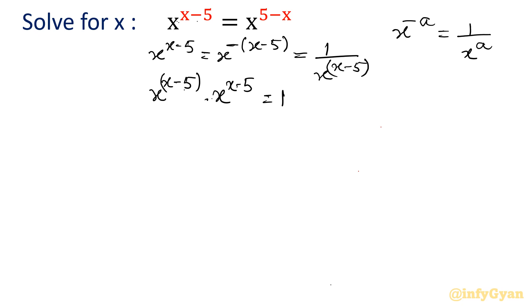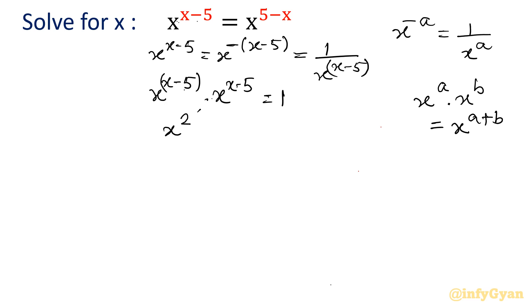Summing the exponents using the property x^a times x^b = x^(a+b), this becomes x^(2(x−5)) = 1.